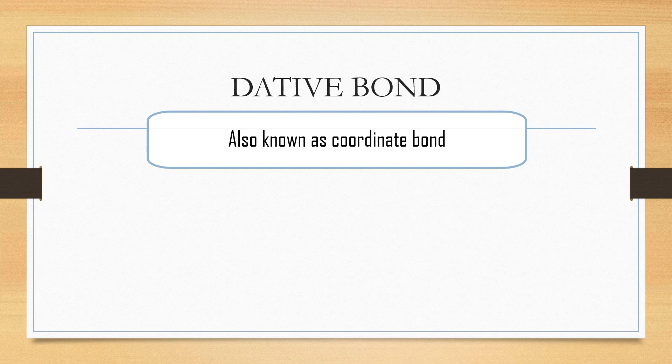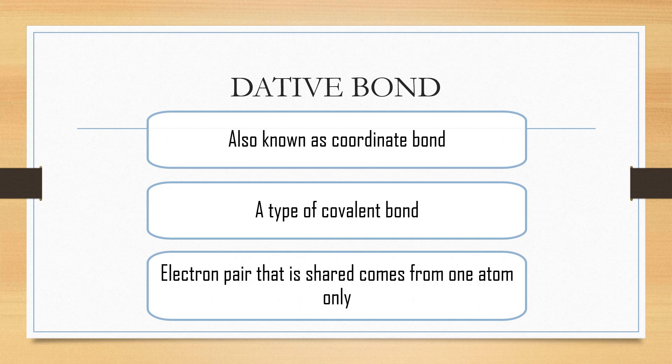Dative bond, also known as coordinate bond, is actually a type of covalent bond which occurs when the electron pair that is shared comes from one atom only.